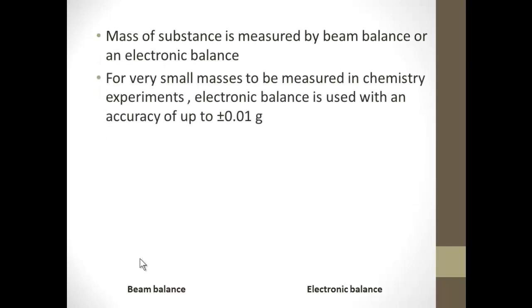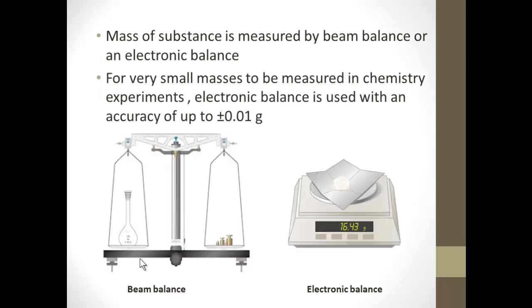Mass of a substance can be measured by using beam balance and electronic balance. In chemistry experiments, smaller masses are measured by using electronic balance with an accuracy up to 0.01 grams.